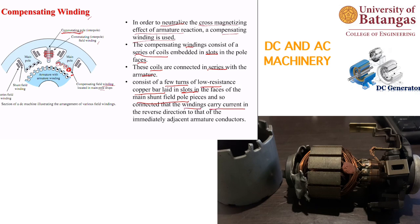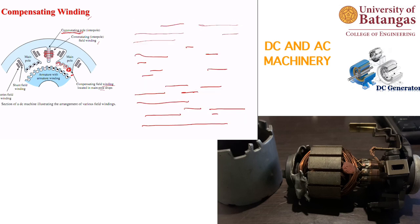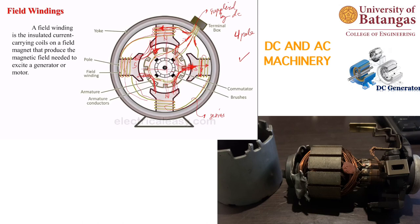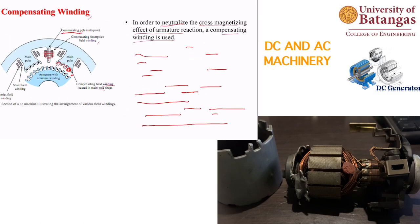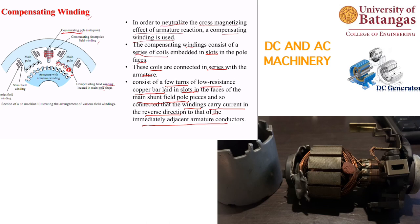Although the compensating windings are connected in series and their currents flow in the same overall direction, when aligned with the armature conductors they appear in reverse direction — causing the electromagnetic fields to cancel. Remember: compensating windings are always connected in series with the armature conductors.